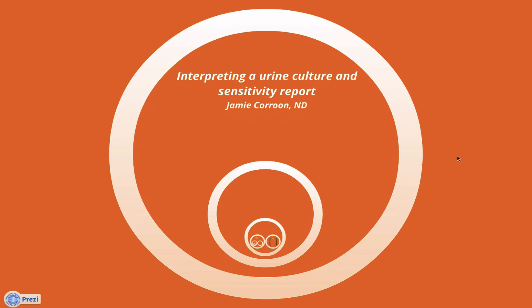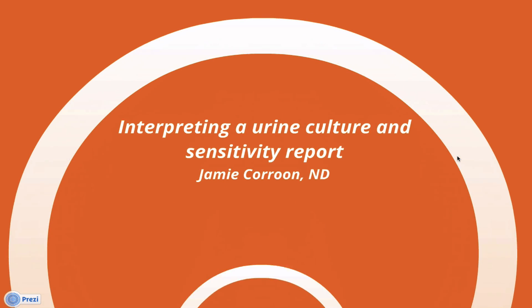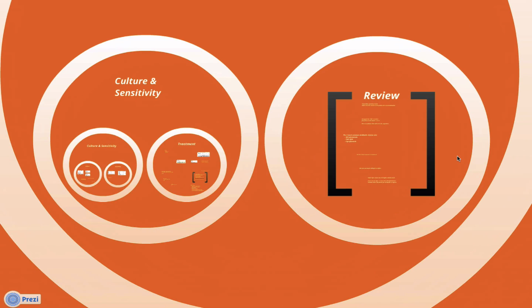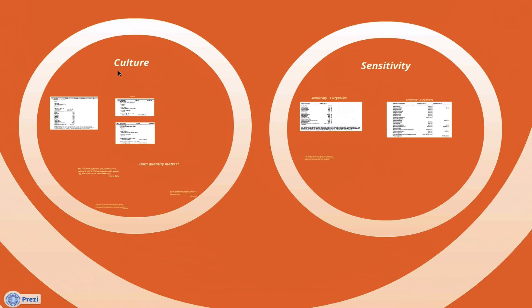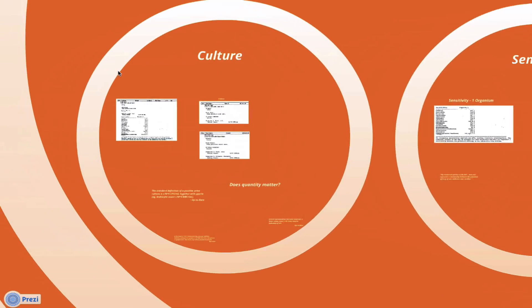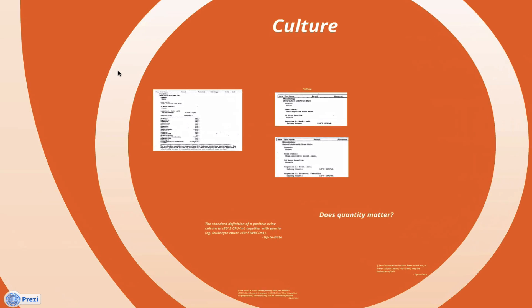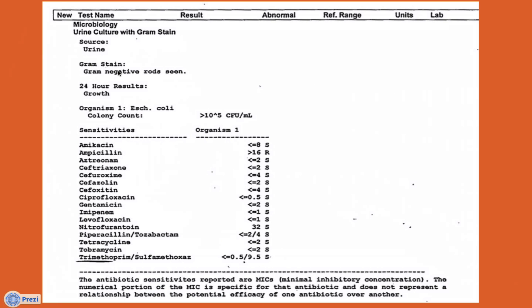In this video, we're going to focus on how to interpret a urine culture and sensitivity report. We're going to start out by looking first at the culture itself and taking an example culture report. On the top half, you have the culture, and then on the bottom half, you have the sensitivity.